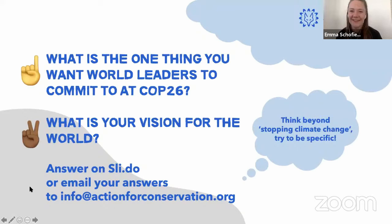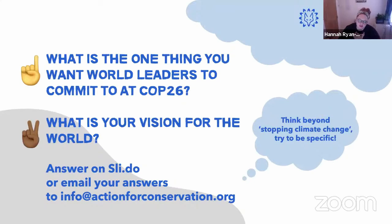After our session we have a couple of tasks for you. As a class or with your friends, think about: what is the one thing you want world leaders to commit to at COP26? And what is your vision for the world — the way you want the world to be in the future? You can answer in Slido if watching live, email us afterwards, or collate answers as a class. One tip: be specific with your points — think beyond 'stopping climate change' and try to be really precise.